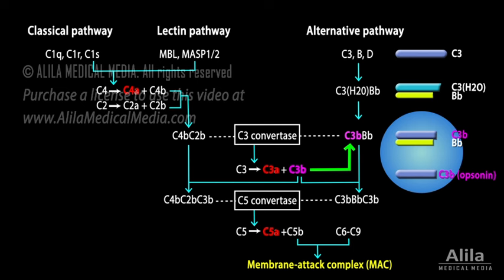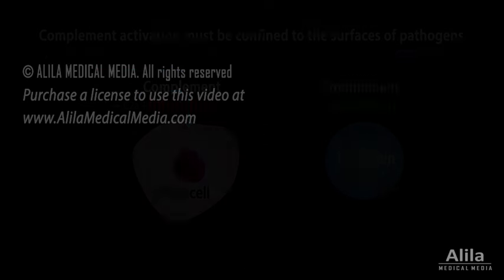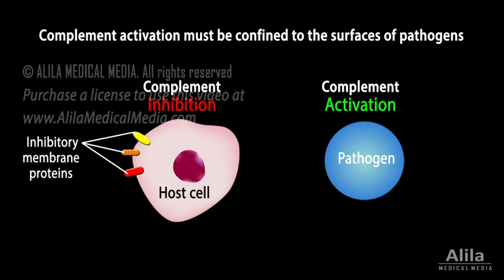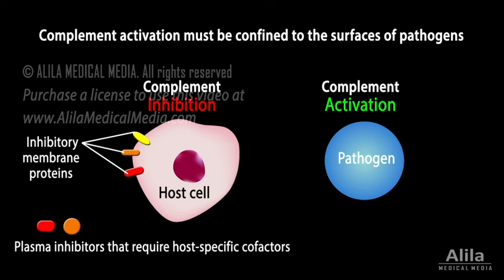The complement system is modulated by a number of regulatory proteins that confine complement activation to the surface of pathogens, to prevent inadvertent damage to healthy host tissue. This is particularly important for the alternative pathway, which can activate spontaneously and has an amplification effect. Host-specific protection is generally achieved by having inhibitory proteins present on the host cell's surface or plasma inhibitors that require host-specific cofactors.